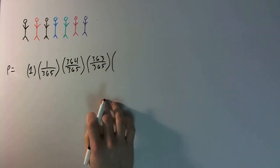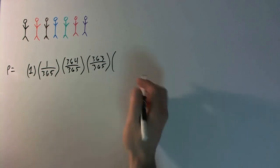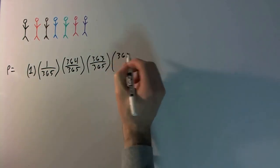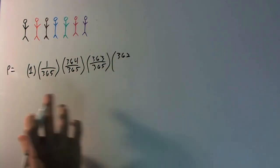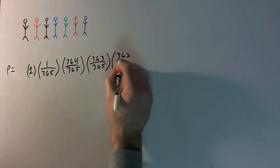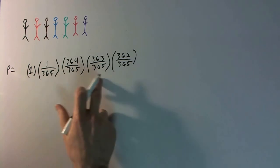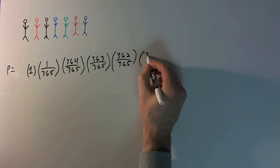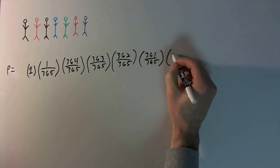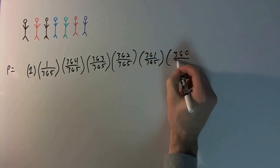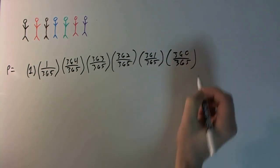And then, for the fifth person, 362/365, right, because any other date, they can't have the same birthday, only these two people can. So, 363/365, right, so that's, let's see, 1, 2, 3, 4, 5, 2 more, 361/365, and then 360/365, okay?